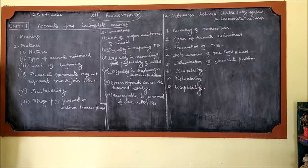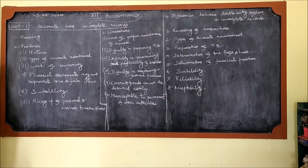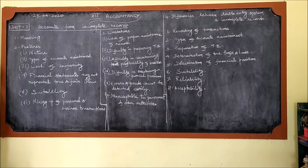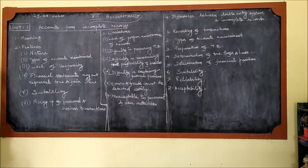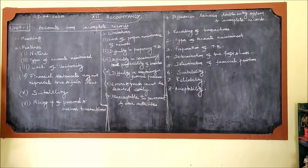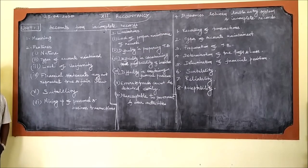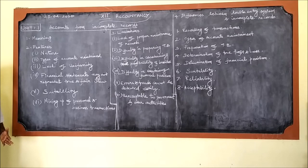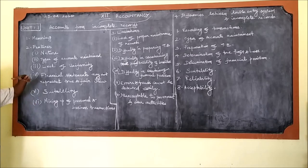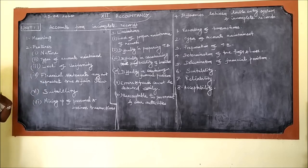Good morning, dear friends. We shall go to 12th standard accountancy from today onwards. The first unit in book one is accounts from incomplete records. When we hear the term 'incomplete records,' we automatically think about complete records, otherwise called the double entry system. Under double entry system, we take into consideration all aspects of transactions, whereas under incomplete records, only one aspect of every transaction is attended to.